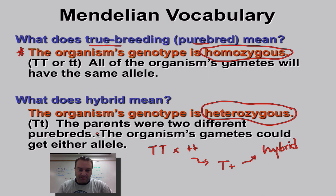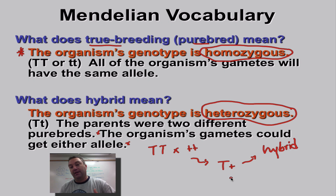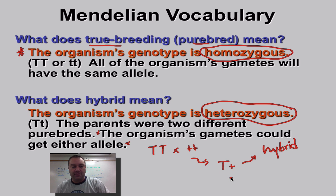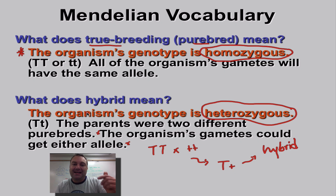A hybrid individual's gametes will carry either a big T or a small T — their alleles are different, and they can pass different alleles to their offspring. That's a very important concept. Make sure you know the difference: purebred equals homozygous, and heterozygous equals hybrid.